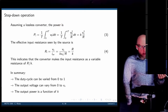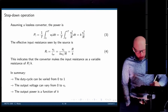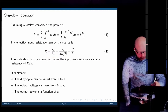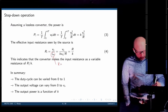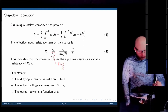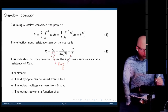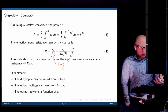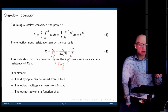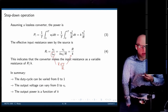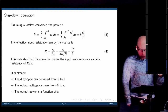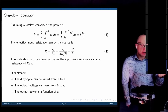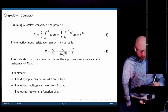The effective input resistance seen by the source can also be calculated. The resistance is Vs divided by the average current, and the average current is K times Vs over R. This simplifies to R over K. The duty cycle also affects the impedance seen by the source, similarly to transformers. In conclusion, the duty cycle goes from 0 to 1, the output voltage from 0 to Vs, and both output power and effective resistance are determined by K.